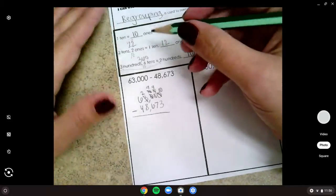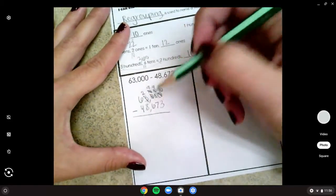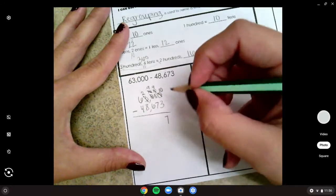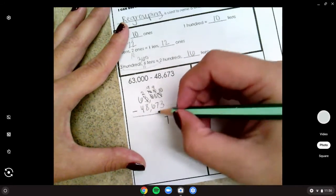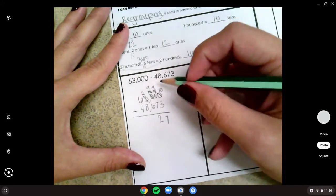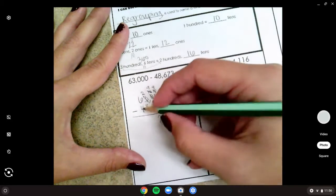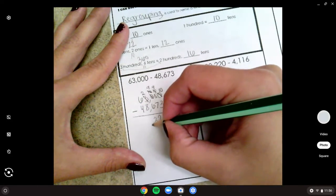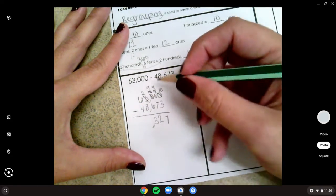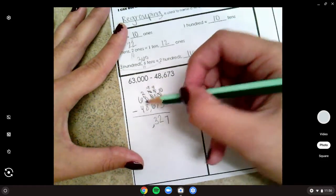All right, I think we can finally start subtracting. Ten minus three is seven, nine minus seven is two, nine minus six is three.